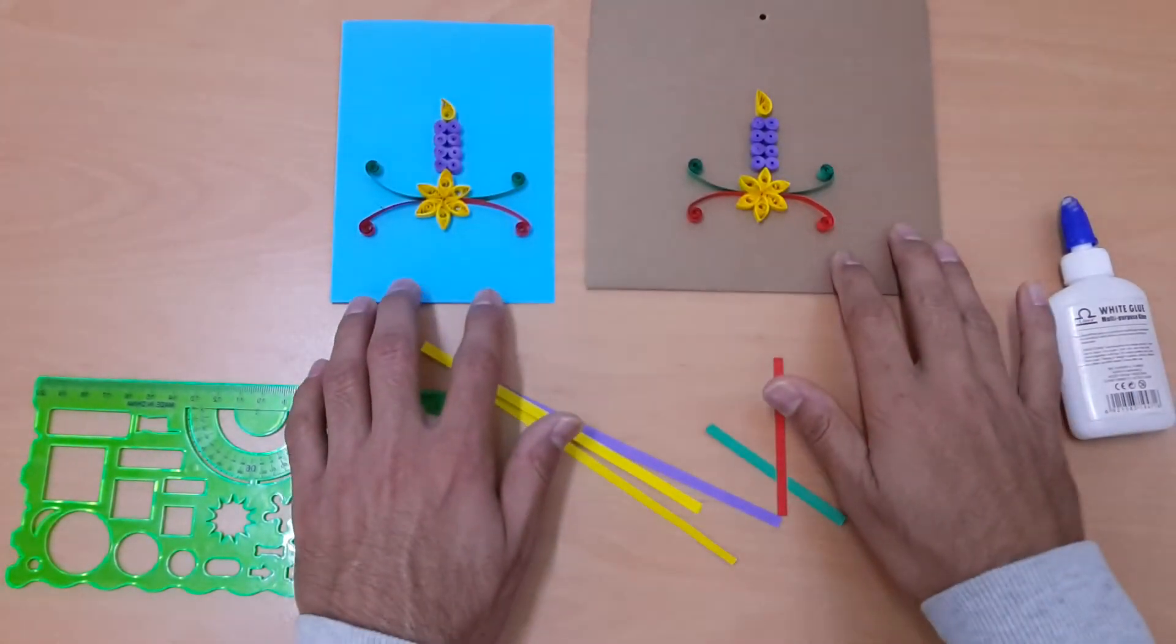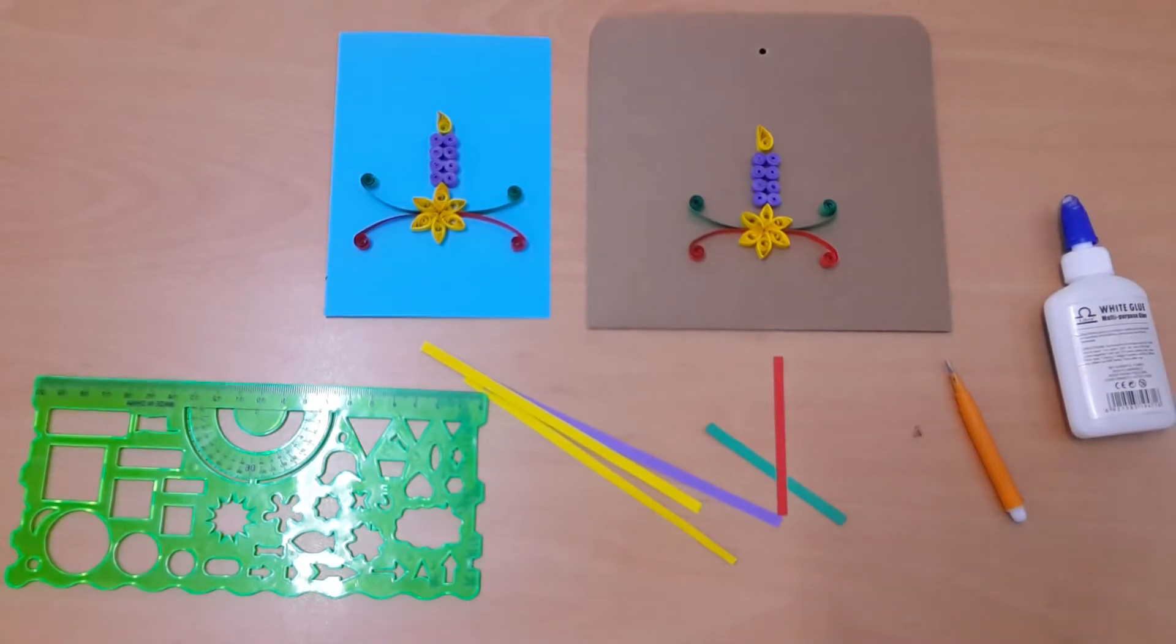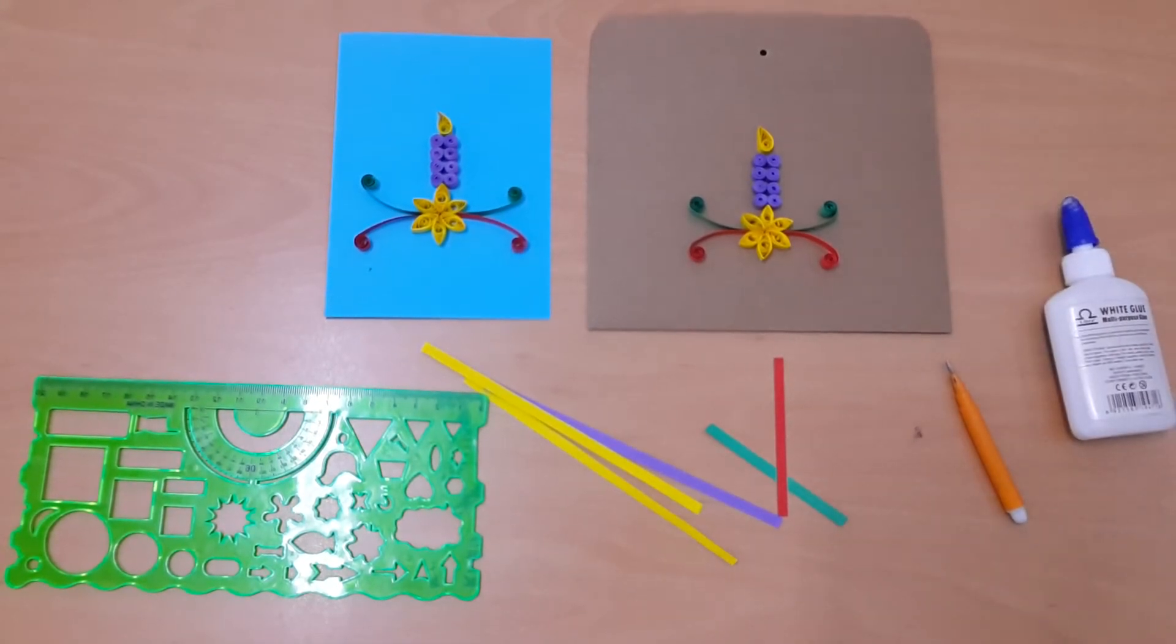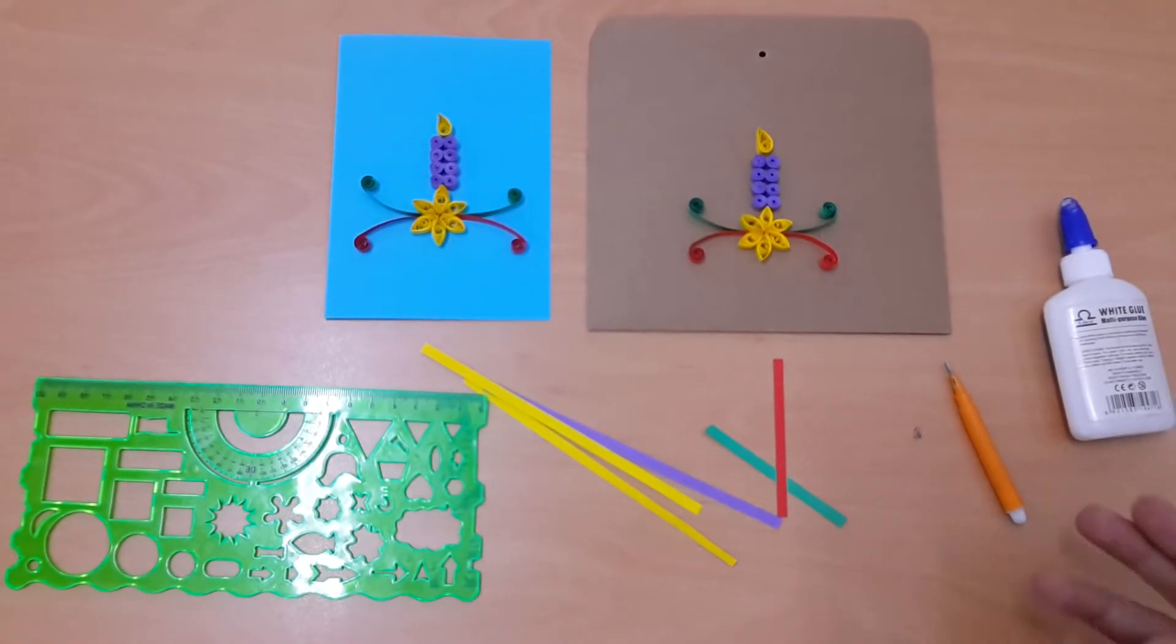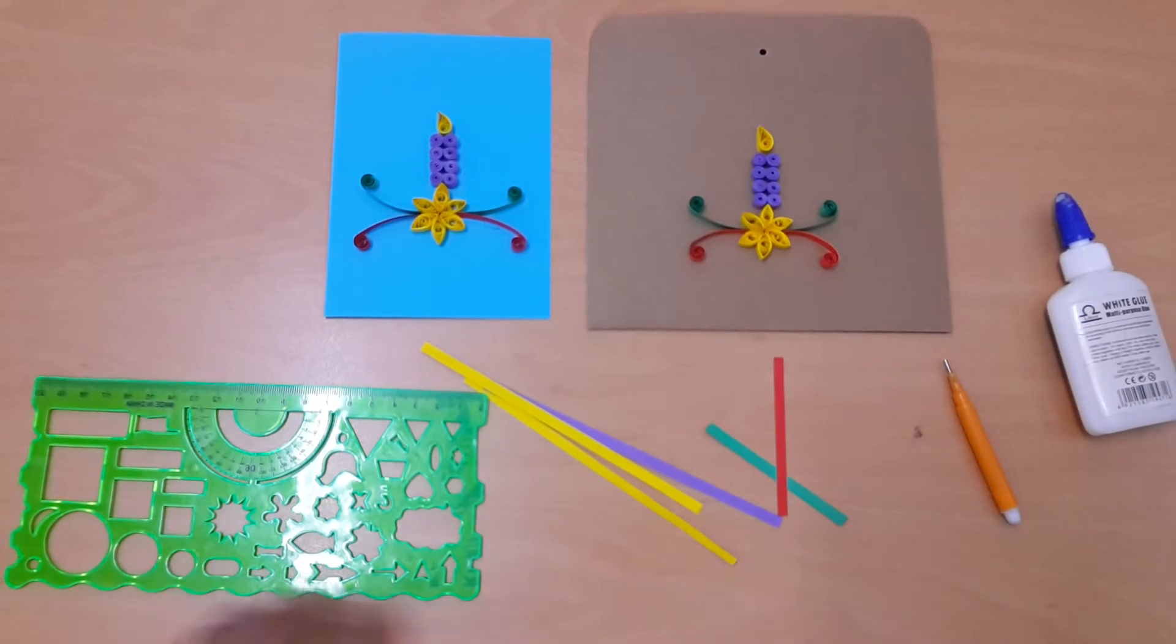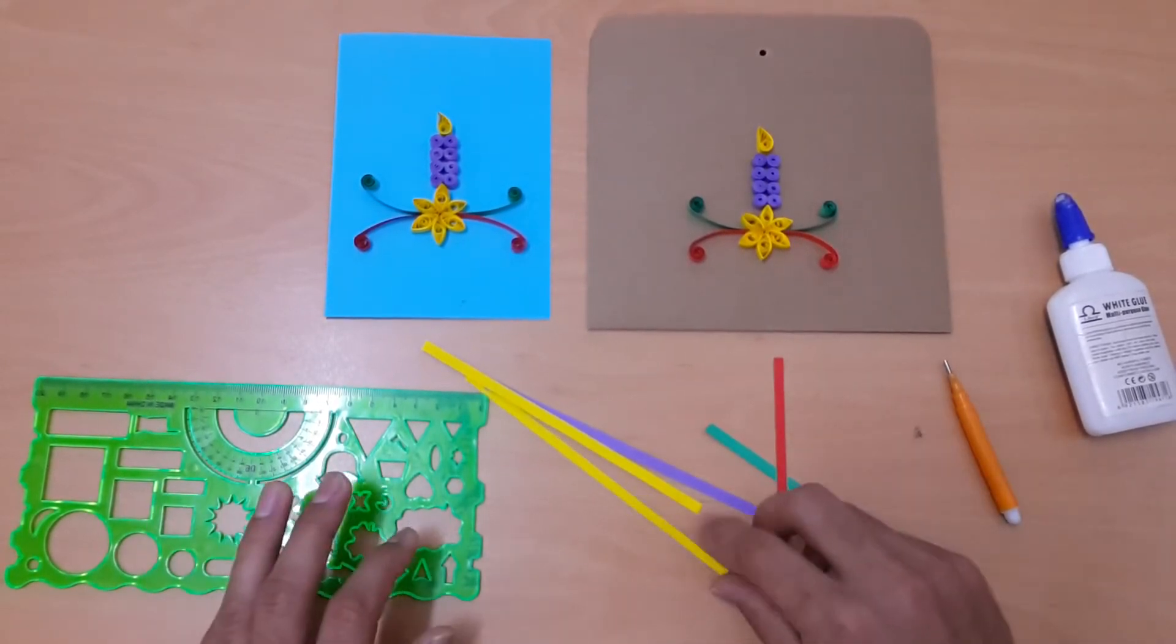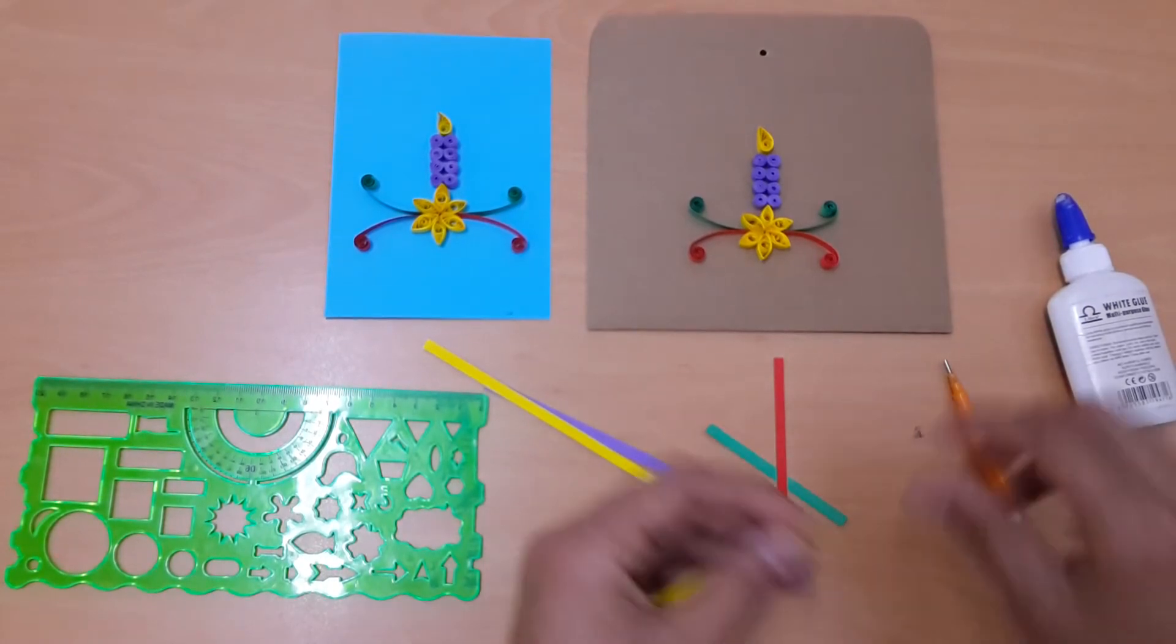Welcome back friends to our channel Art Dive with Mohamad Cheza. Today we are going to make a greeting card cover or envelope cover with a flower and candle. For that we need a quilling tool, glue, some multiple strips, and a round dia ruler. So first of all friends, we will start with the flower.